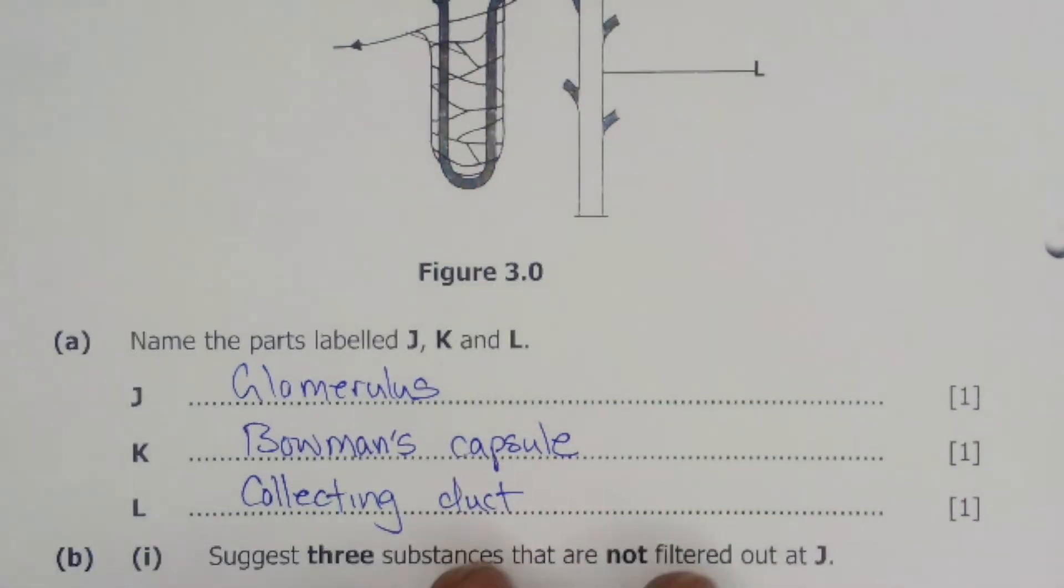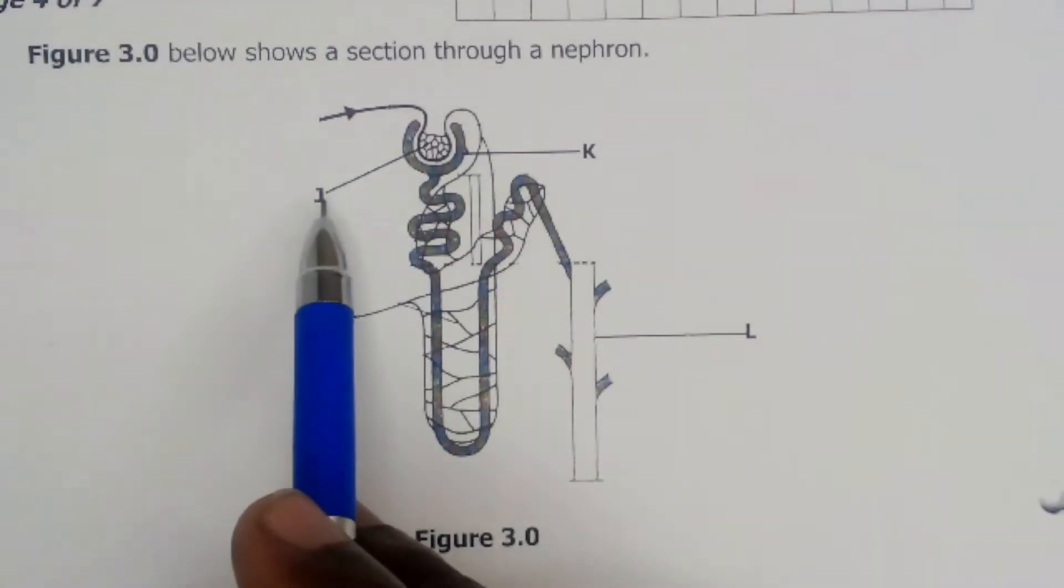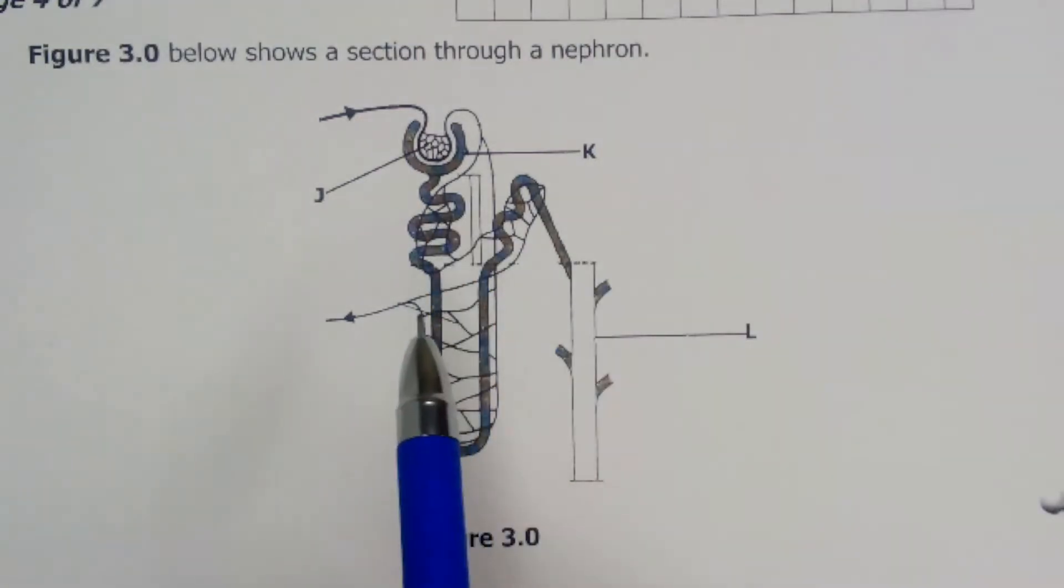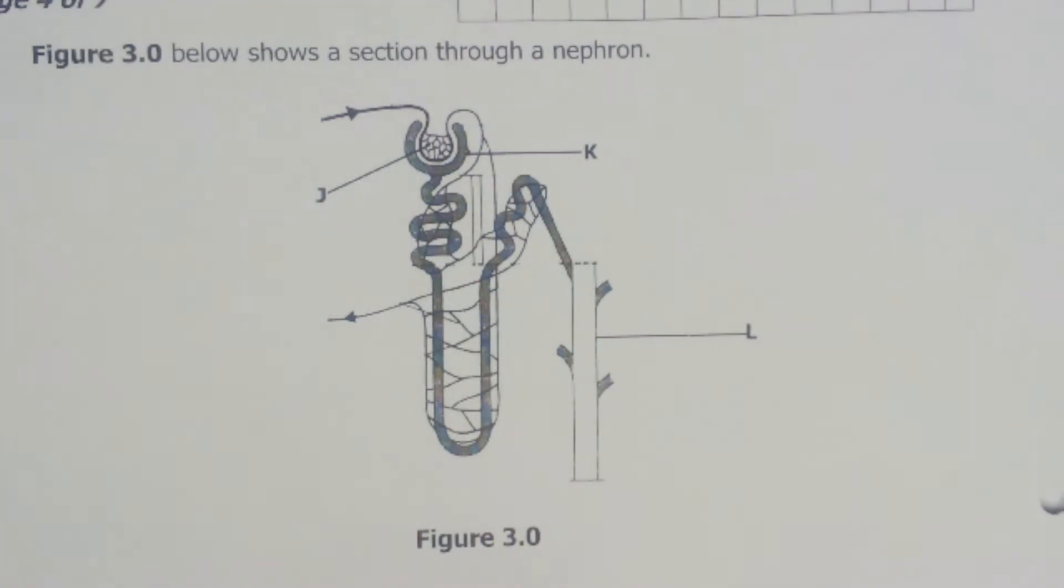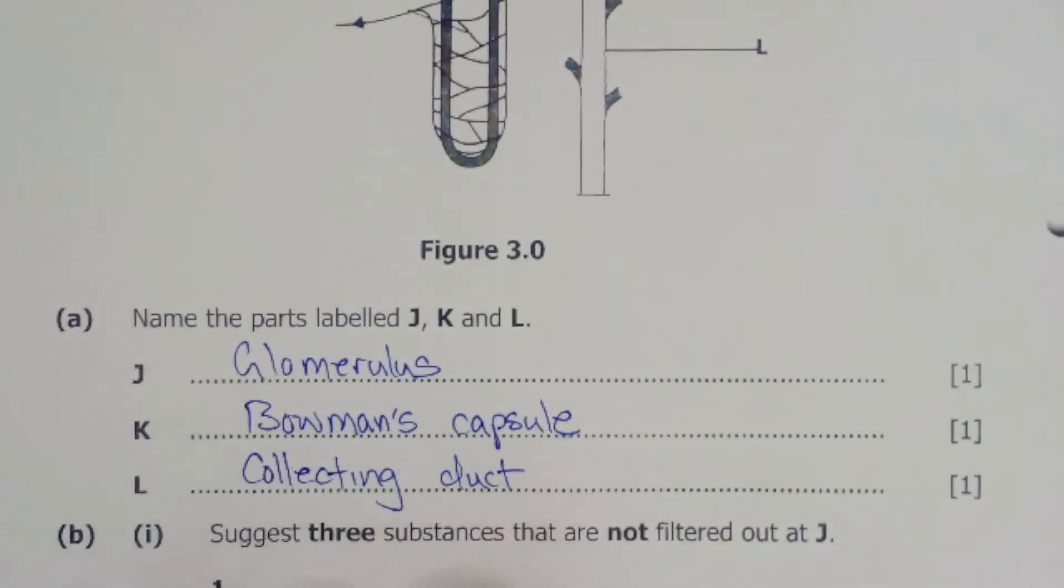So these are the parts which we have labeled: J as our glomerulus, K the Bowman's capsule, and L which is the collecting duct. These were the solutions to the first part of the question.